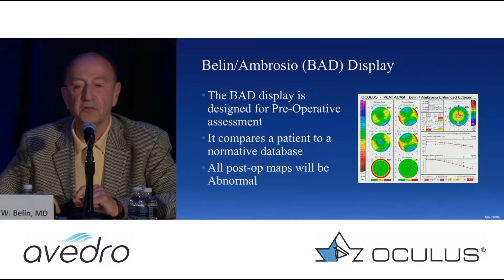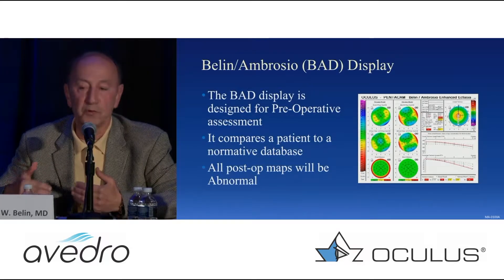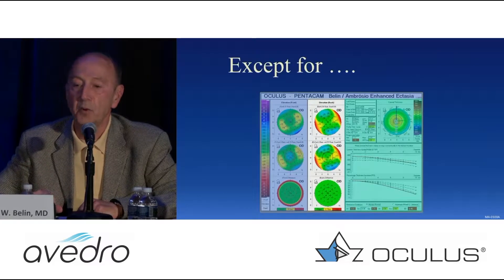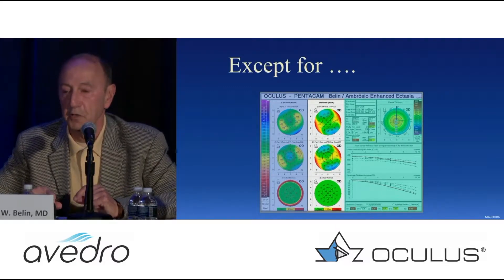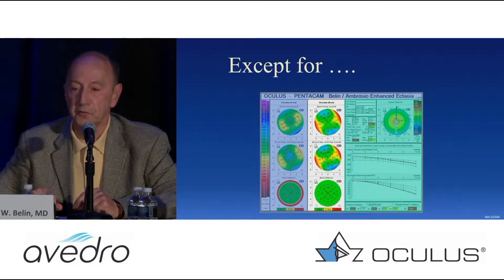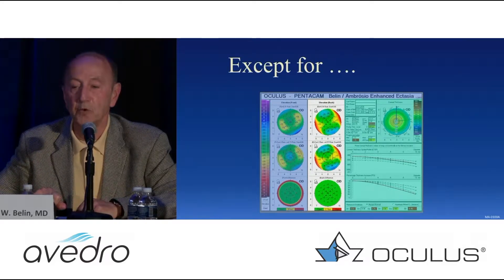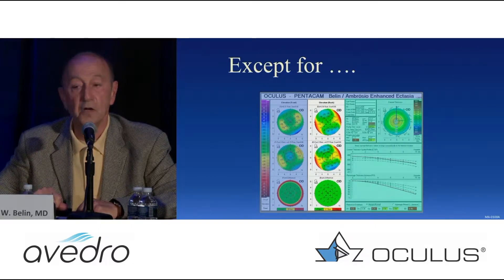Realize the BAD display is designed for preoperative assessment — it compares a patient to a normative database. All post-LASIK maps will be abnormal, so the BAD has limited value. However, this part of the BAD can still be utilized: looking at the posterior surface, because you should not see changes on the posterior cornea post-refractive surgery. So if you only have post-op data, you can look at this part, and if it's abnormal, you know it's either post-LASIK ectasia or someone missed preexisting keratoconus preoperatively.